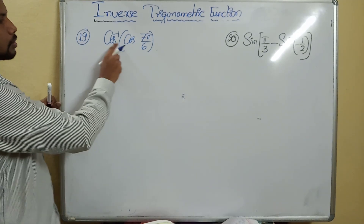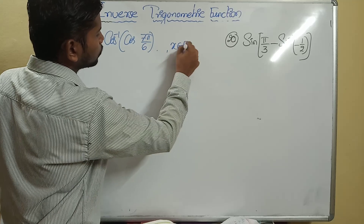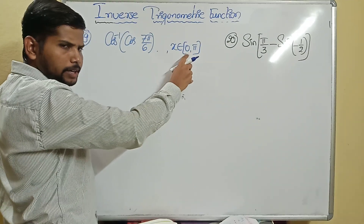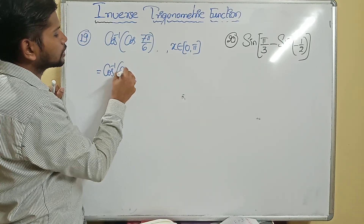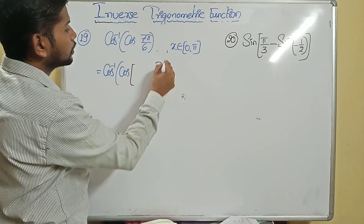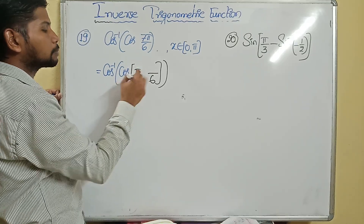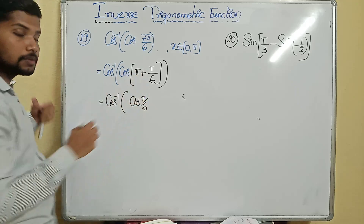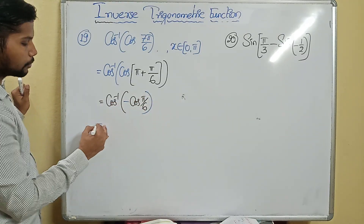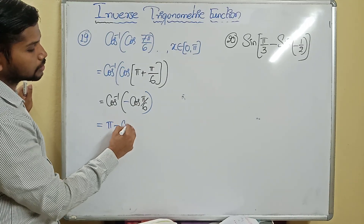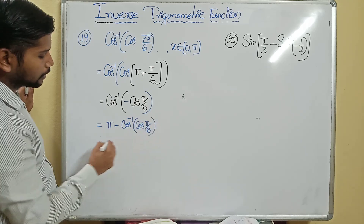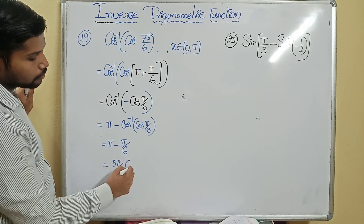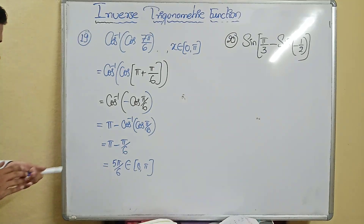Next: cos inverse of cos(7π/6). The domain for cos inverse is [0, π], i.e., 0 to 180°. Since 7π/6 is 210°, which is outside [0, 180°], I need to convert using allied angles. Writing 7π/6 as π + π/6: this is in the third quadrant where cosine is negative. So cos(π + π/6) = −cos(π/6). Cos inverse of −x = π − cos inverse of x, giving π − cos inverse of cos(π/6) = π − π/6 = 5π/6. Since 5π/6 (150°) is in [0, π], this is correct.